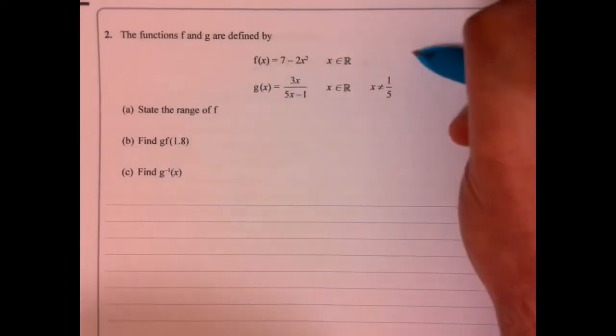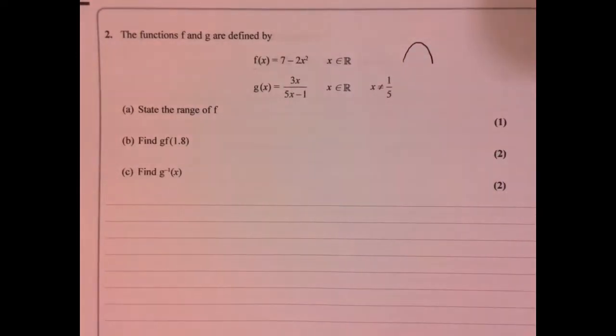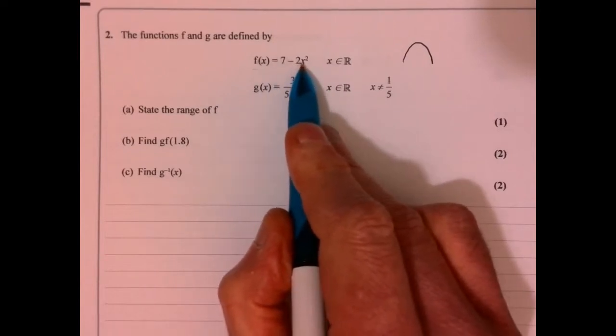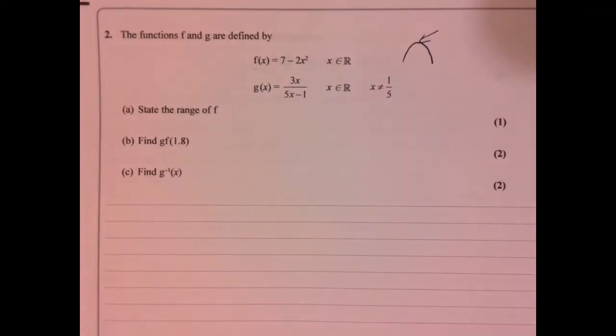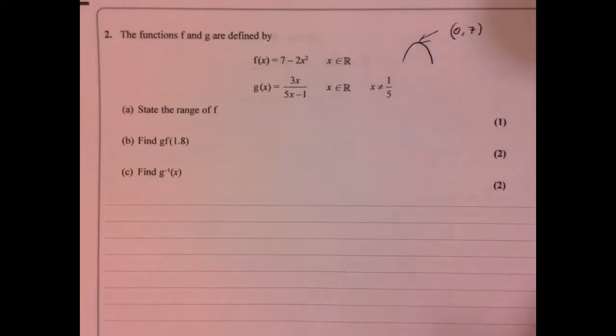What we should recognize is that this is going to be a sad curve because there's a negative in front of the x squared, so I know it's like that. What I'm really after is I just need to know this point up here, and that's going to be (0, 7).